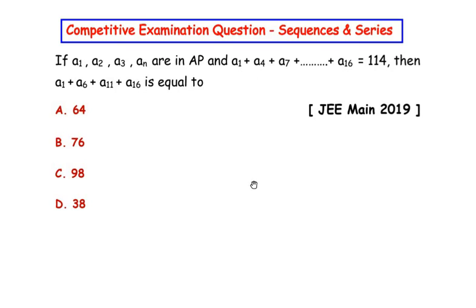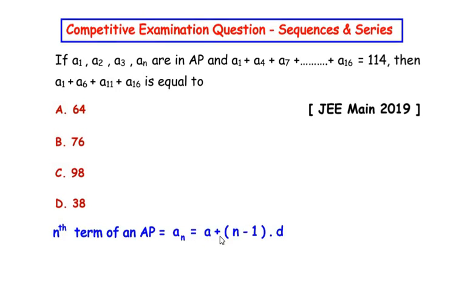Let us begin by using the formula for nth term of an AP which is an equals a plus n minus 1 times d, where a represents the first term of the series, n is the nth term, and d is the common difference.